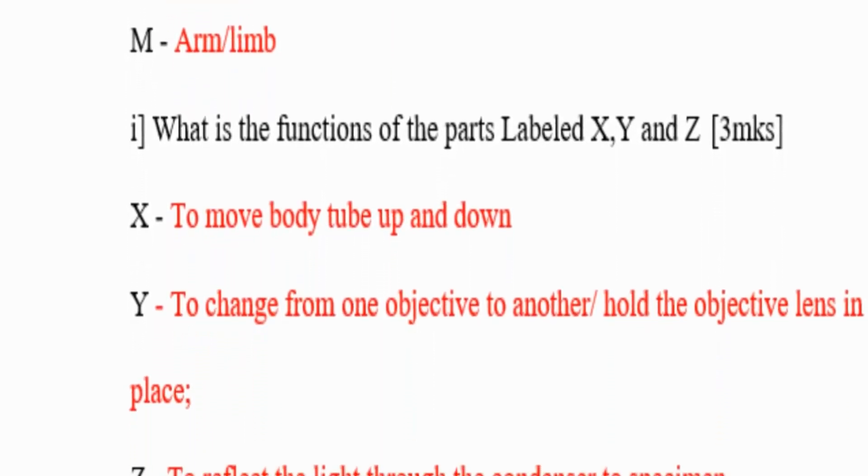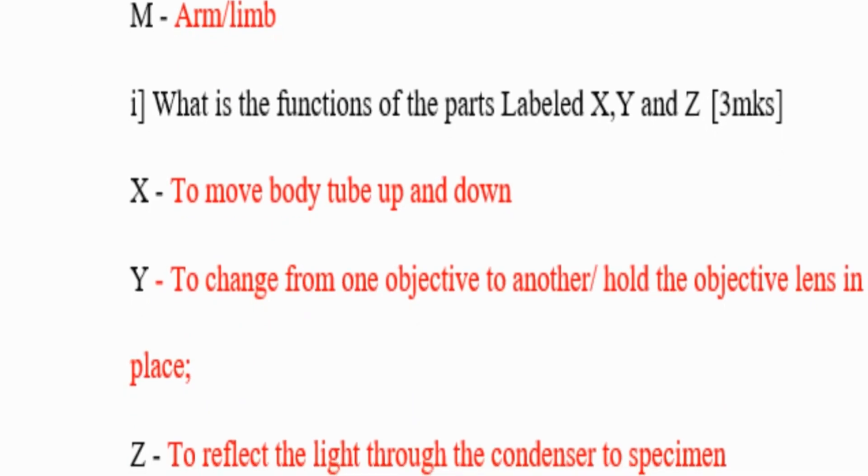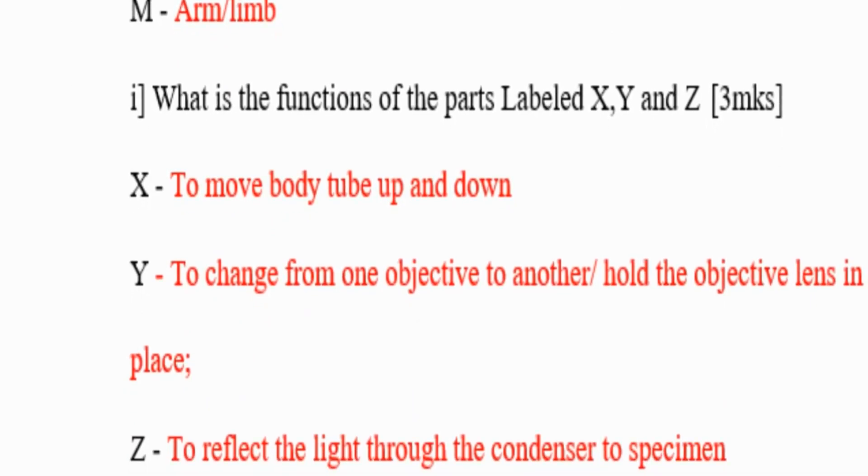What are the functions of the parts labeled X, Y, and Z? X: to move body tube up and down. Y: to change from one objective to another, hold the objective lens in place. Z: to reflect the light through the condenser to specimen.